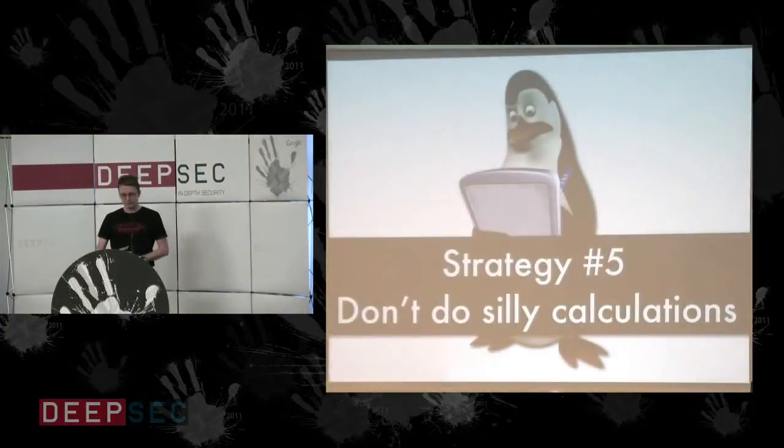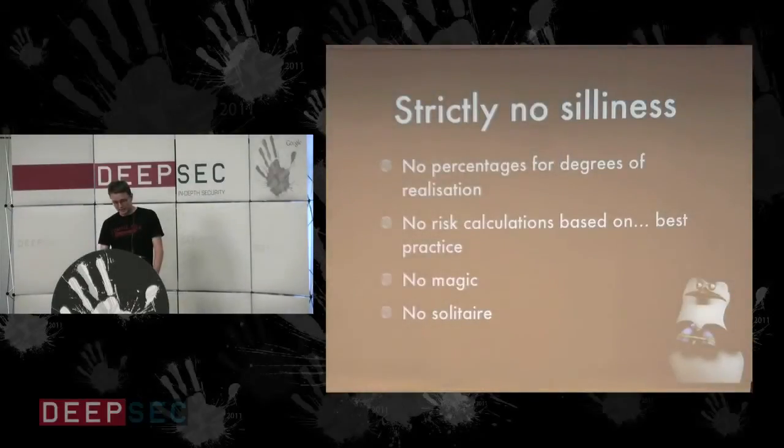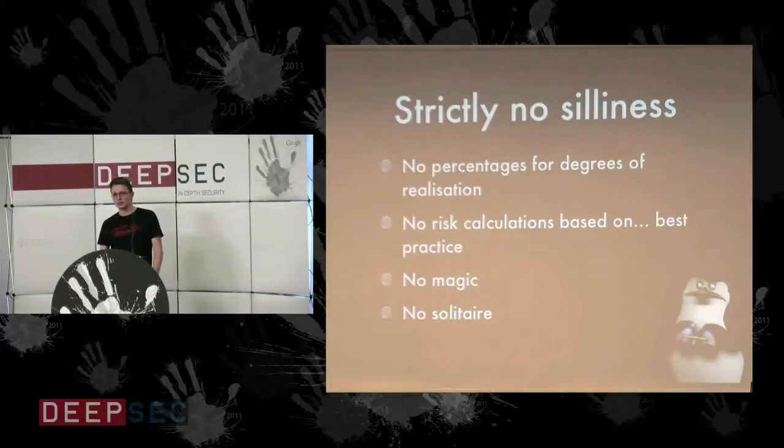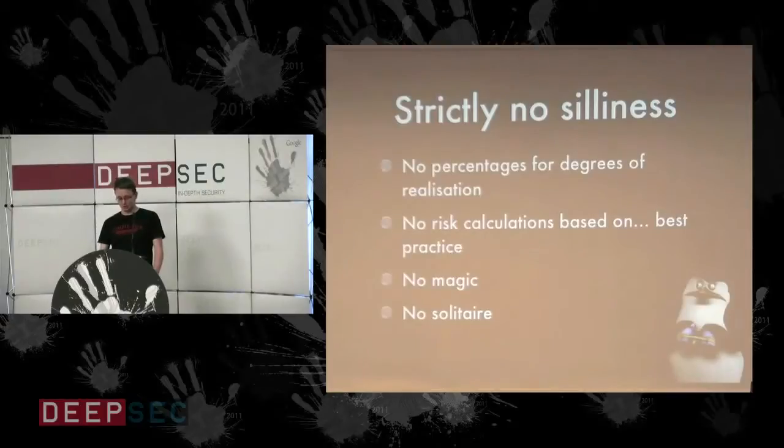We don't want to do any silly calculations. There are some tools which do percentages to track the realization of controls. I'm not sure but I don't know what it means I log 50%. I really have no idea what this means. So what we said is okay either you do the logging, you plan to do it or you don't. Anything else doesn't really matter. If you have 30% of your log or 40% I don't really care. Either you have it or you don't. And if you don't you're not compliant and that's all.